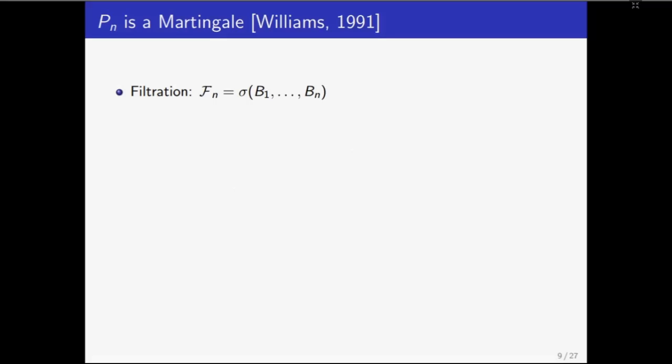We will now show that the random variable Pn is a martingale with the filtration Fn equals sigma of the Bernoulli random variables B1 to Bn. By the construction of the random walk model, Pn is measurable in Fn. Now let's compute the conditional expectation of Pn plus 1 given Fn. Notice that B1 to Bn get fixed and Bn plus 1 is 0 with the probability of half and is 1 with the probability of half. According to the recursion defined in the previous slide, the new erasure probability when you move down in the binary tree is 1 minus of 1 minus P the whole square and when you move up in the binary tree is P square. Simplifying this expression, we see that it is equal to P of B1 to Bn which is nothing but the random variable Pn. Hence Pn is a martingale.